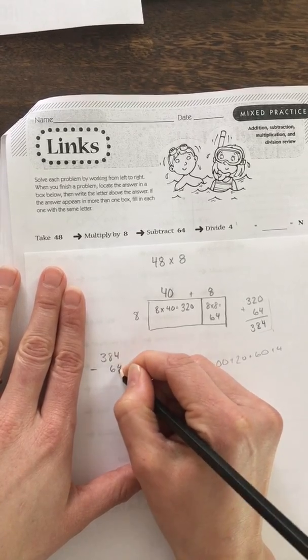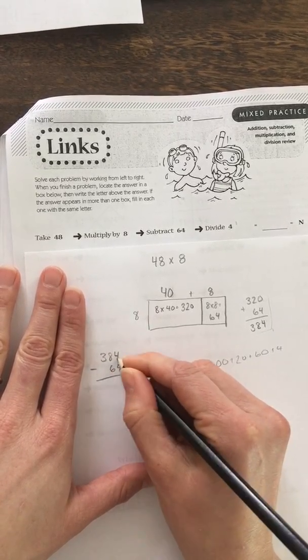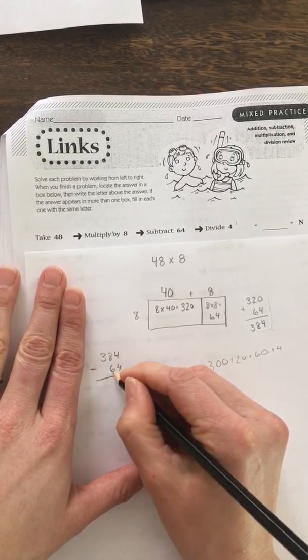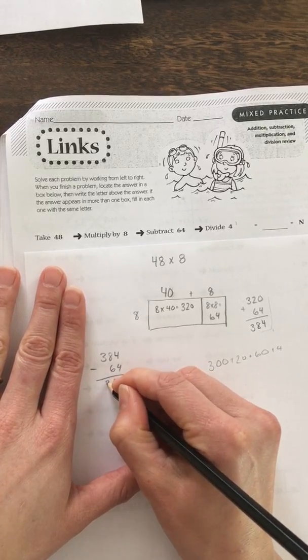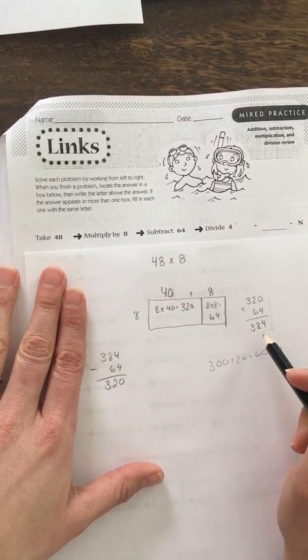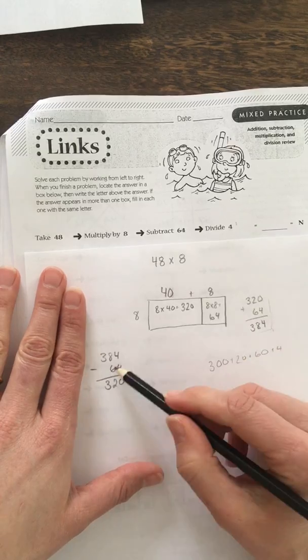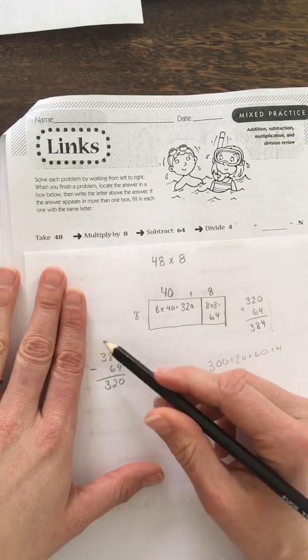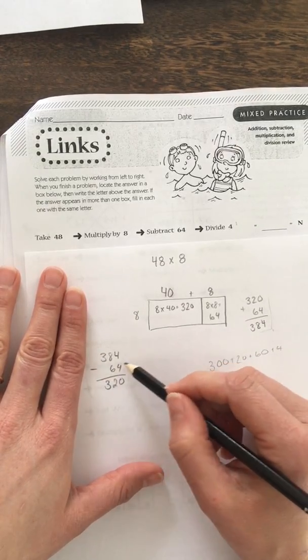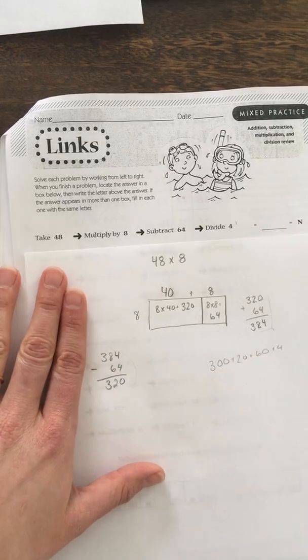384 minus 64. So take 4 away from 4 is 0, 8 minus 6 is 2, and 3. Same with the standard algorithm for addition, you should be using the standard algorithm for subtraction too. Not doing like 384 minus 60 minus 4 or anything like that.